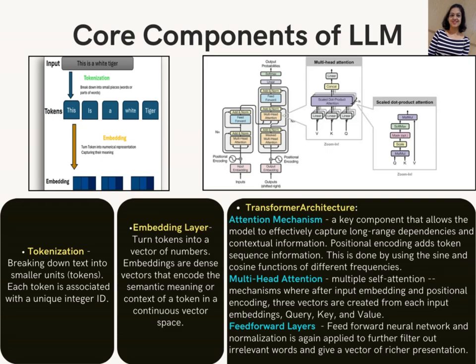Positional Encoding adds token sequence information using sine and cosine functions of different frequencies. Multi-head attention involves multiple self-attention mechanisms where, after input embedding and positional encoding, three vectors are created from each input embedding: query, key, and value. Feed-forward layers apply a feed-forward neural network, and normalization is again applied to further filter out irrelevant words and produce a richer vector representation.